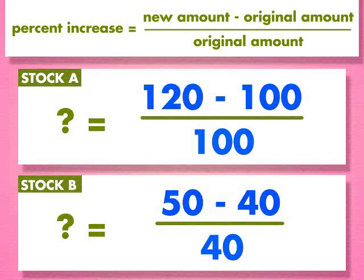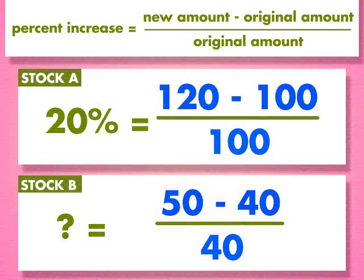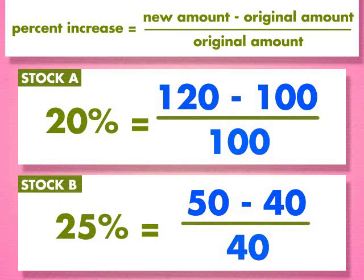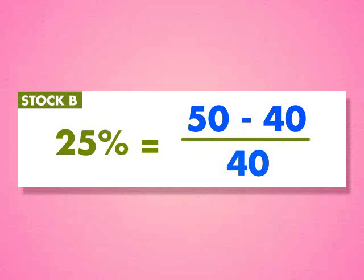The Percent Increase of Stock A is 20%, and the Percent Increase of Stock B is 25%. You can also see in this diagram that Stock B gives higher returns.